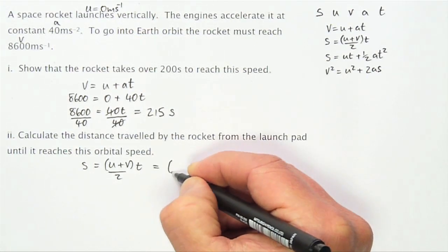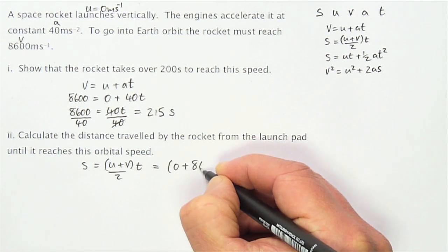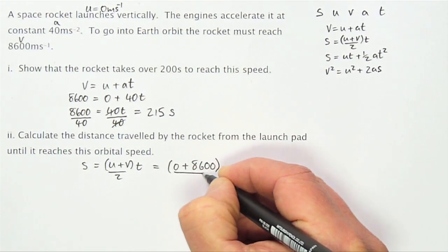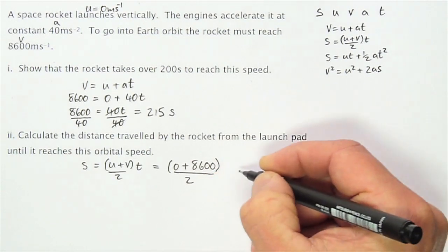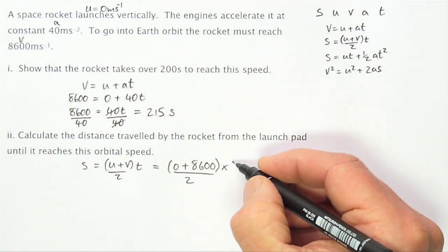U is 0. V is 8600. I divide all of that by 2. And I multiply by the time which I've just calculated 215.